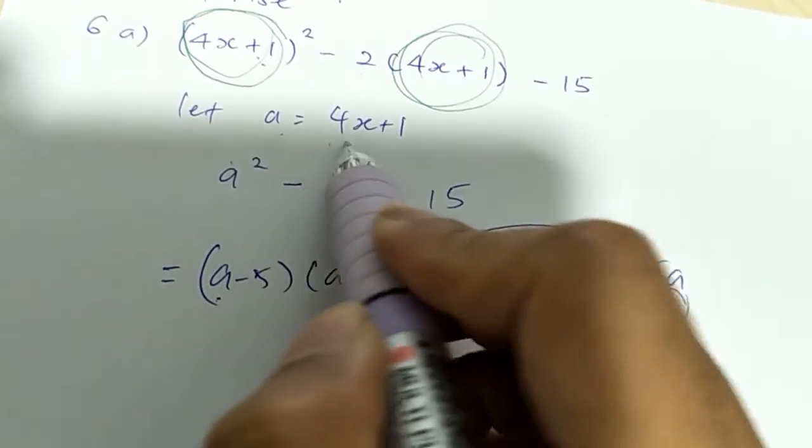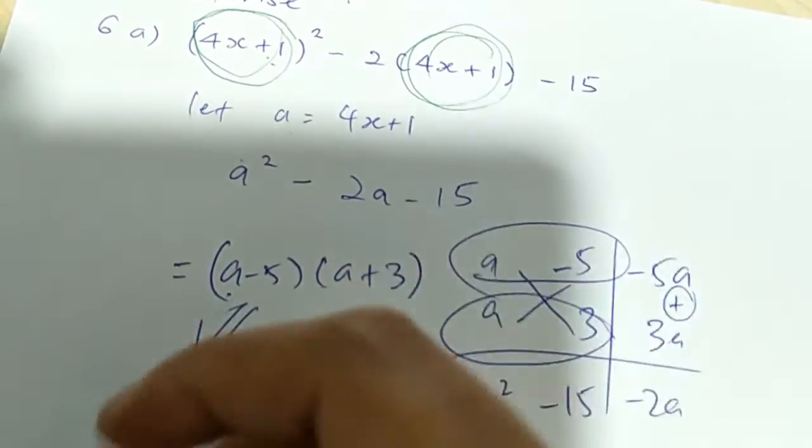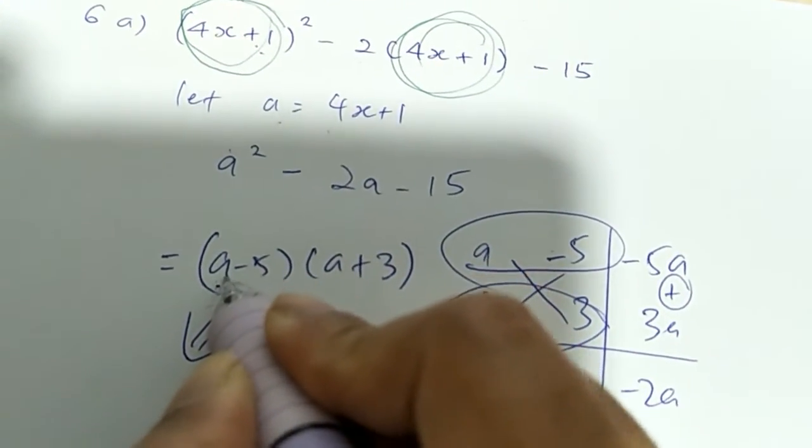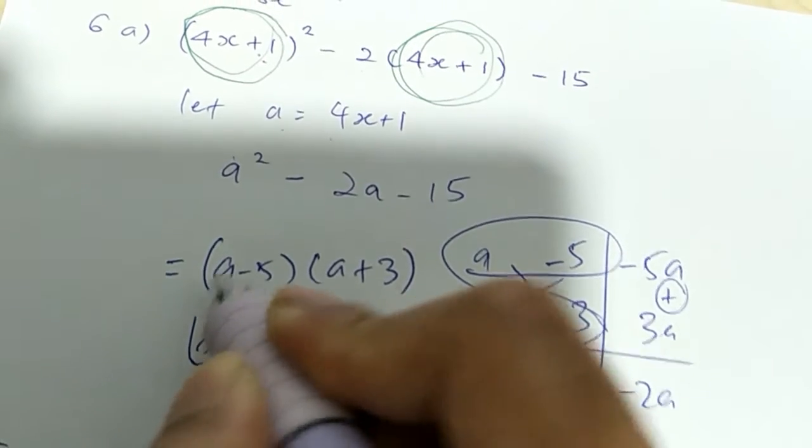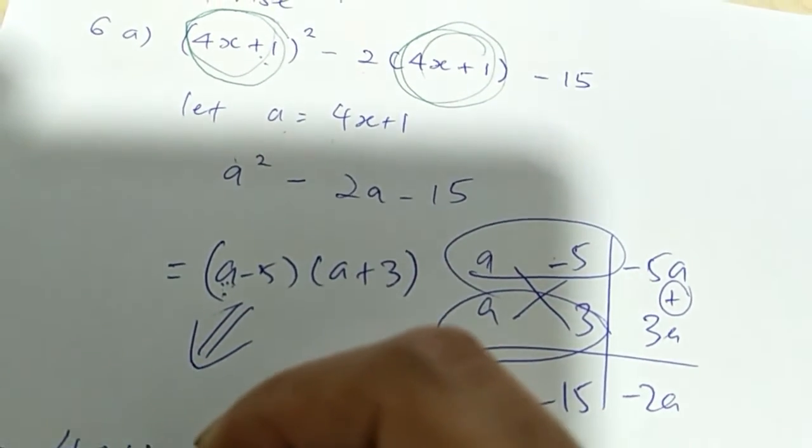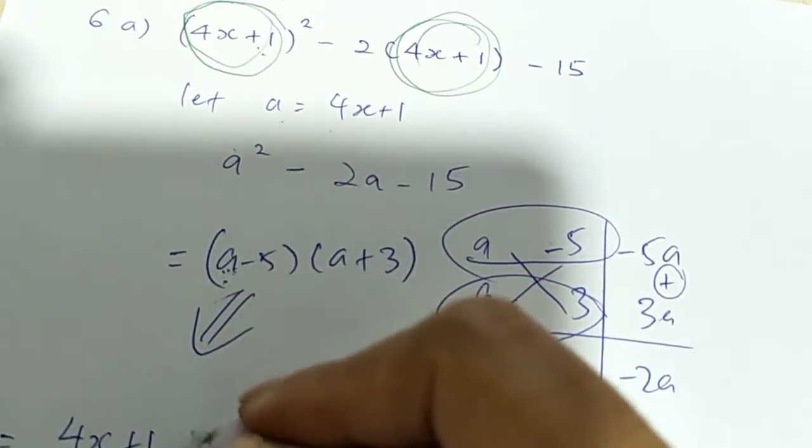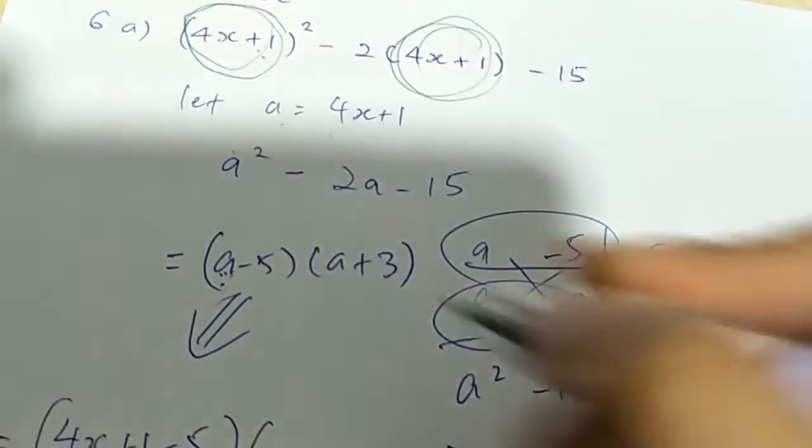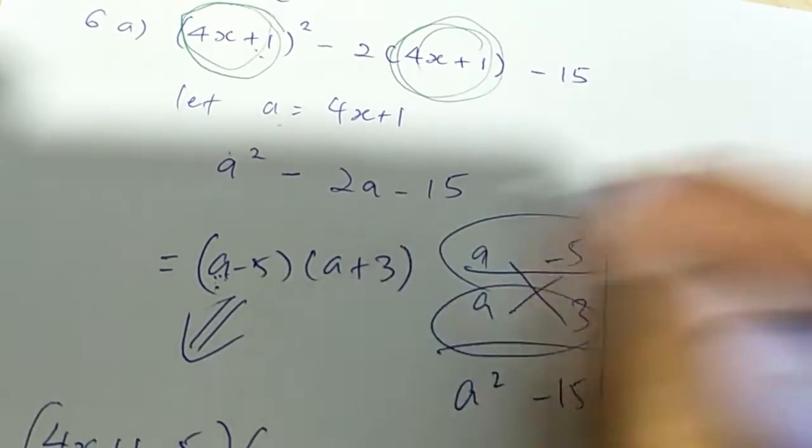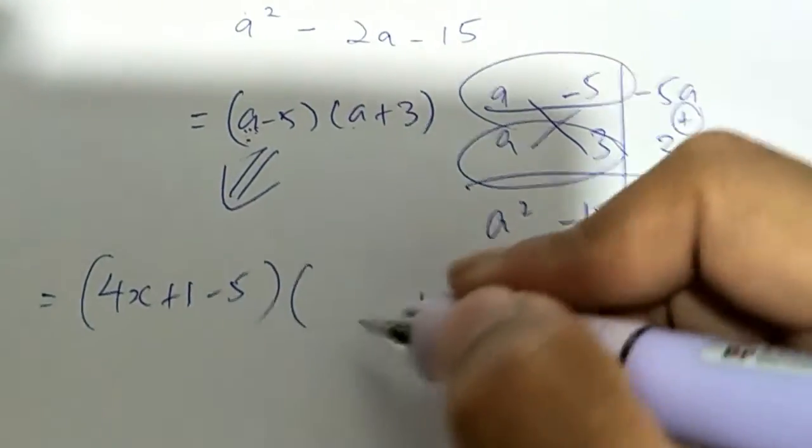So this a is actually what? 4x plus 1. So then this looks, you now need to put back the 4x plus 1 into this thing. So you get 4x plus 1. A is 4x plus 1, right? So then that is minus 5. This one, this is a plus 3, but my a is actually 4x plus 1. So it will look like that.